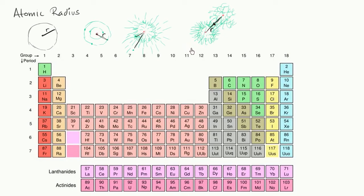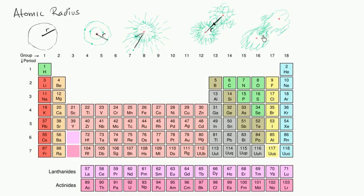Another way is: what if you have two atoms of the same element that are bonded to each other through a covalent bond? In a covalent bond, you essentially have two atoms — the nucleus of one, the nucleus of the other — and they're sharing electrons, so their electron clouds actually overlap with each other. The electrons in that bond could spend some of their time on this atom and some of their time on the other atom. So when you have a covalent bond like this, you can find the distance between the two nuclei, take half of that, and call that the atomic radius.